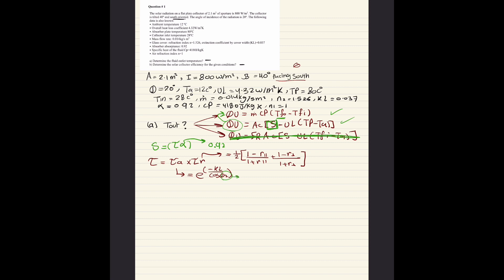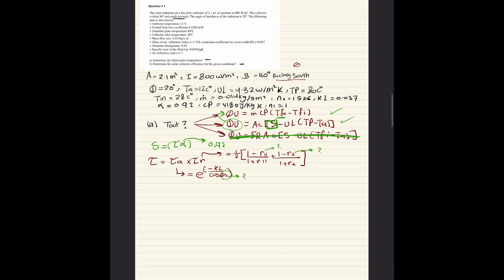We have theta 2 missing, R parallel missing, and R perpendicular missing. First let's start solving for theta 2. We have this equation, n1 sine theta 1, I think it's called Snell's law, equals n2 sine theta 2. n1 is 1, sine theta 1 is 20, equals n2 which is 1.526 sine theta 2. Solving for this, theta 2 is going to be equal to 12.955.